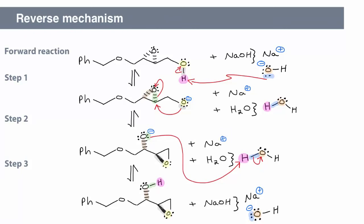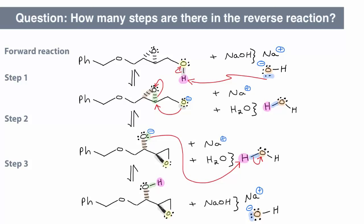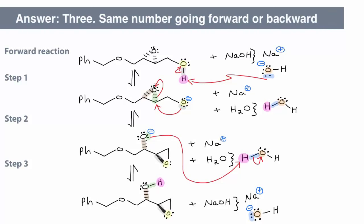Now let's draw the mechanism for the reverse reaction. The products become the starting materials. How many steps does the reverse reaction have? The answer is three. It's the same number of steps in the forward direction as in the reverse direction.